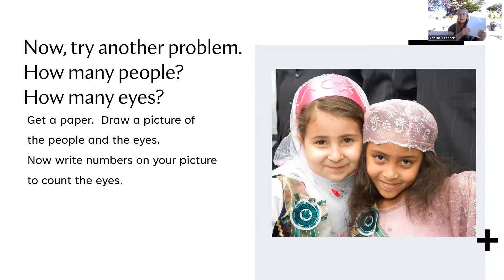Get your paper and remember the way we drew yesterday. Draw a picture of the people and then draw their eyes. Then write numbers on your picture to count the eyes. And if you remember yesterday, we counted in two different ways. We were counting by ones and by twos.